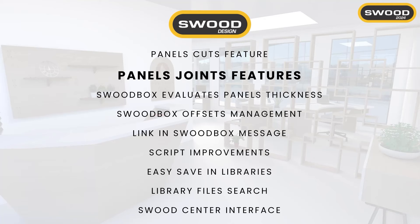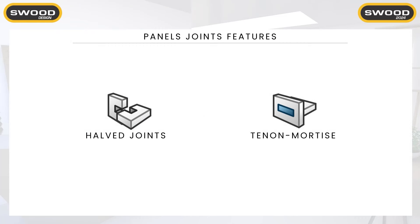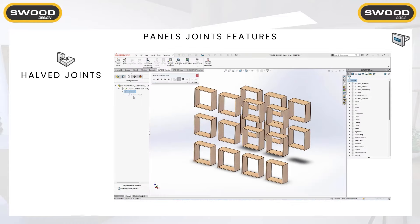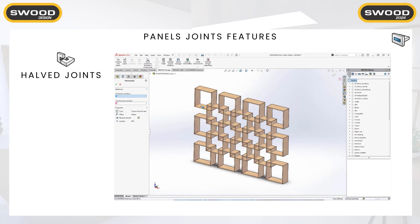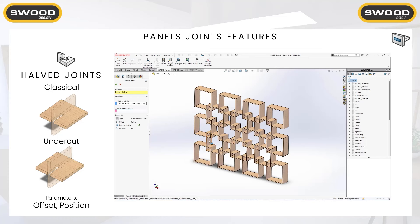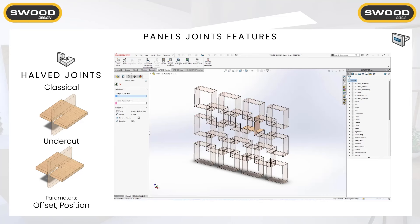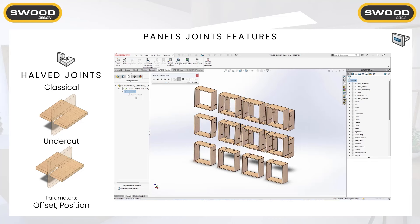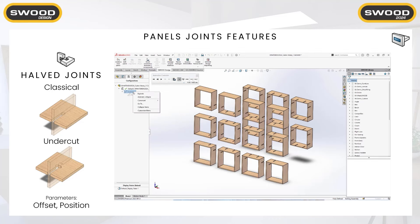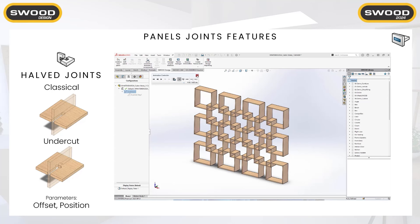Let's continue with the panel joints features. This is divided in two parts: half joints, and tenon and mortise. If two panels have some interference, you can select two faces and then choose: do a classical half joint or an undercut one with offset and position parameters. You can select multiple interference areas to create joints. For people who have done this before, it could be painful — now it will be very easy.